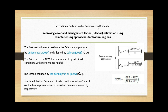The second equation is by Vander Knijff in 1999, adapted to European climate conditions, where alpha equals 2 and beta equals 1. Just to remind you, NDVI is equal to near infrared minus red, divided by near infrared plus red. In this video I'm going to apply three equations: first the equation of Vander Knijff, then the equation of Coleman with the 0.1 factor, and finally the equation by Durigon.